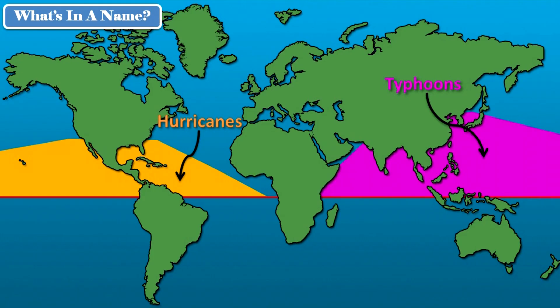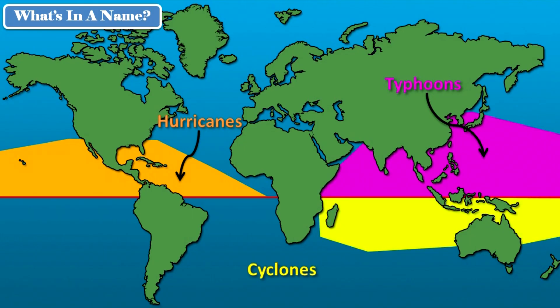So people in Asia, India, and much of Oceania call the storm a typhoon. If it's below the equator in the Western Pacific, it's called a cyclone — so people in Australia call these storms a cyclone. But no matter what you call them, all of these storms form in the exact same way.